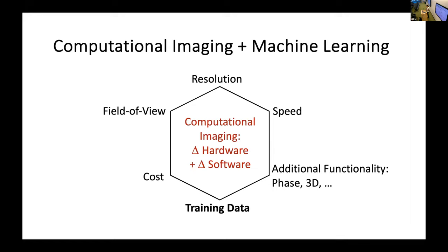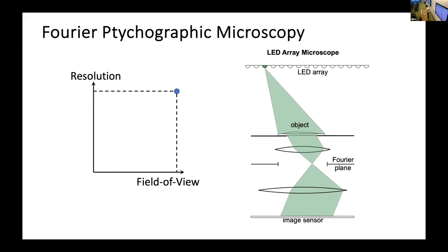And finally, what's been done more recently is this combination of computational imaging and machine learning. So when we look at our tradeoffs polygon, now we've added another vertex and that vertex relates to the amount of training data that you have.